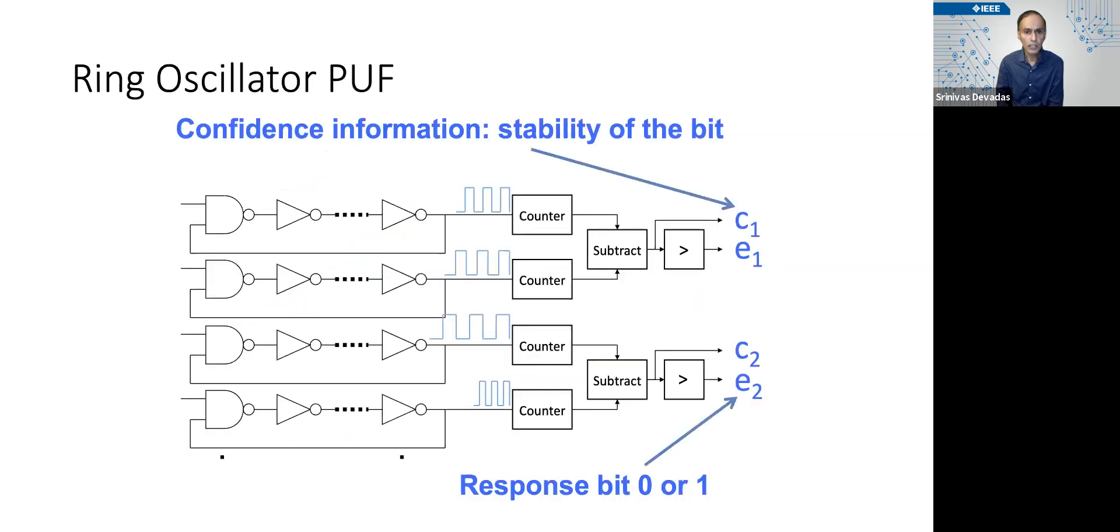If you go back to the ring oscillators, we realize that we can look at this a little bit differently in the sense that we could imagine that we could compute not just the eᵢ comparisons of the counter values, but also have a hint as to which of these eᵢs is stable by looking at the difference between the counter values.